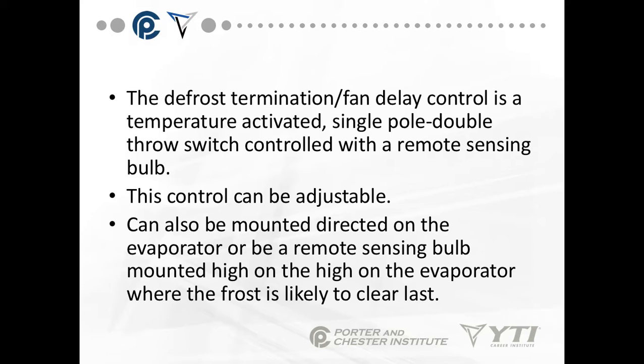The defrost termination and fan delay control is a temperature-actuated, single-pole, double-throw switch with a remote sensing bulb. This control can be adjustable. It's most often mounted directly to the evaporator, but it can also use a remote sensing bulb mounted high on the evaporator where the frost is least likely to clear last — in other words, where the frost is going to stay the longest.